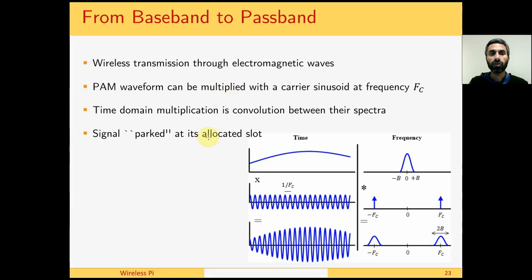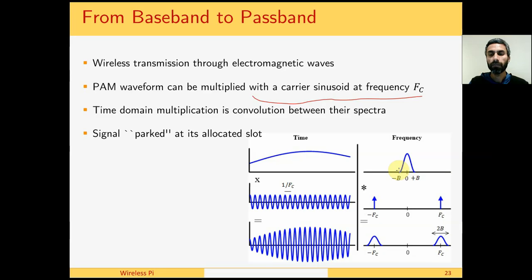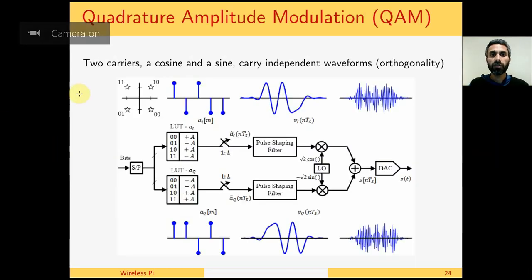We now turn our attention to quadrature amplitude modulation. Wireless transmission happens through electromagnetic waves, so a PAM waveform can also be sent over the air. The method to achieve this is to multiply with a carrier sinusoid at frequency FC through a local oscillator. This time-domain multiplication results in frequency-domain convolution between the spectra, which is why the spectrum of our baseband signal appears at plus and minus FC — the signal is parked at its allocated slot.